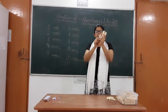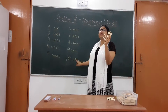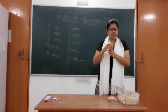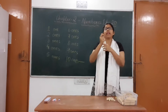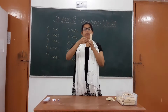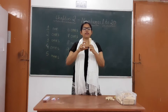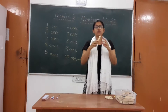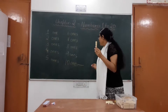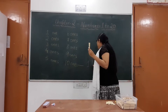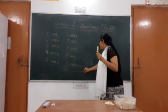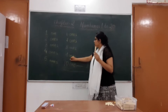Now, I have 10 ice cream sticks. So, will I call it 10-ones? No. I will make a bundle — I will tie it with the help of a rubber band and make a bundle. So now I have 1-ten. What do I have? 1-ten. So, 10-ones means 1-ten.